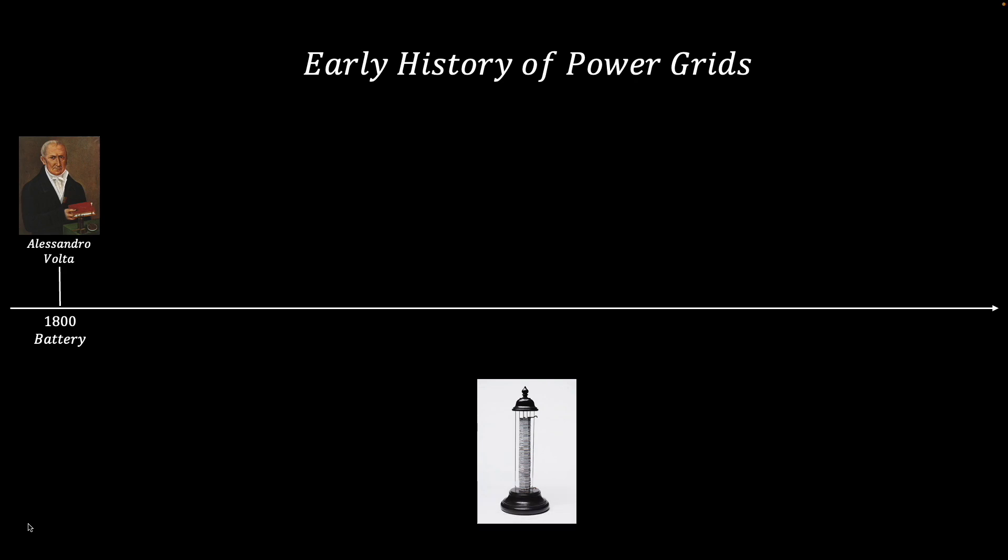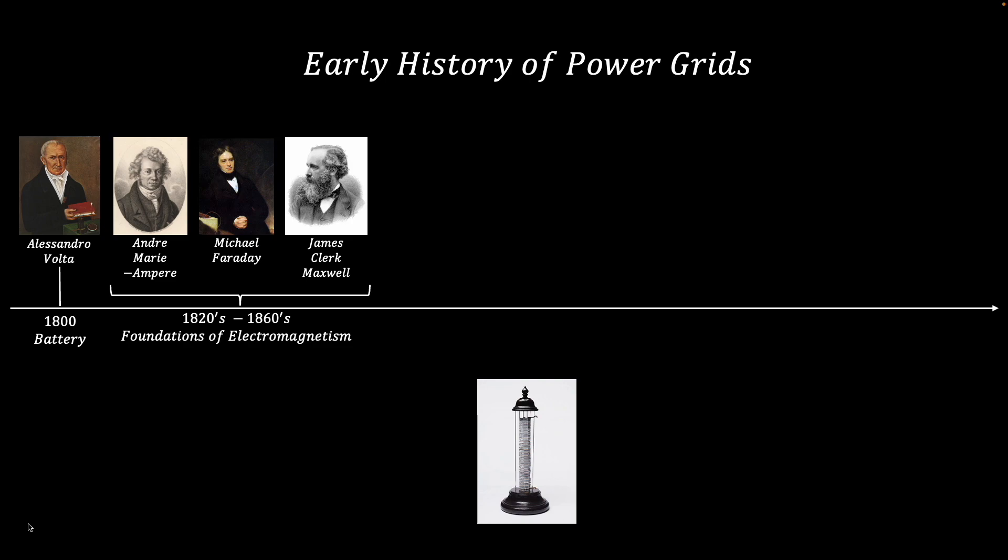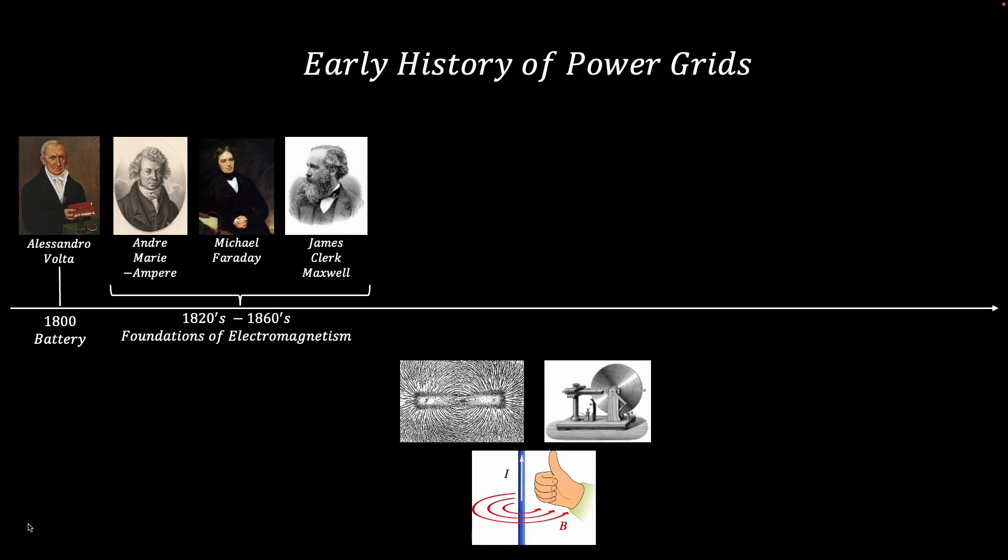In 1800, Alessandro Volta invented the battery, and over the next few decades many other scientists used this invention to investigate electricity and its relationship to magnetic fields and light. Once electromagnetic theory had been firmly established, power grids began to develop.